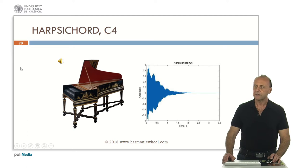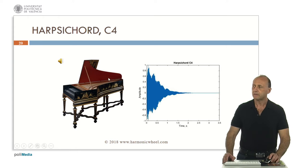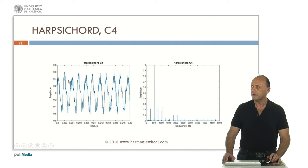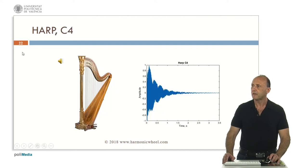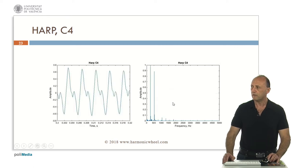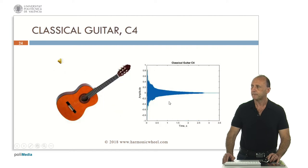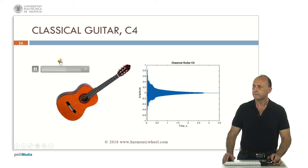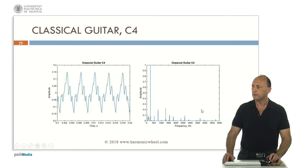Now, plucked strings. This is the harp, C chord, C4. Now the attenuation is very strong. This is the waveform and the spectrum. The harp, C4. Also with a strong attenuation. This is the envelope, the waveform, and the spectrum. Classical guitar, C4. In this case, the attenuation is practical. This is the envelope, the waveform, and the spectrum.